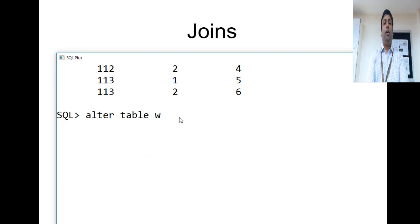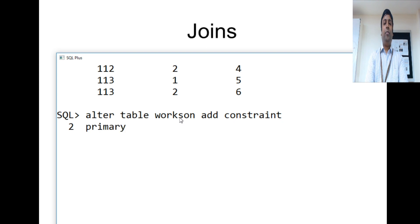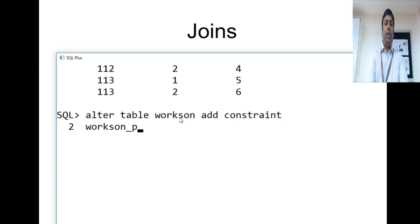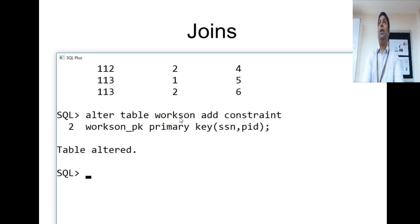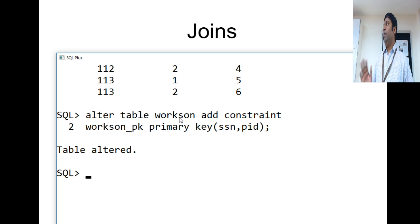To enforce this, we use the ALTER TABLE command: ALTER TABLE works_on, then ADD CONSTRAINT with constraint name works_on_PK, and the constraint is PRIMARY KEY on columns SSN and PID. This makes the combination of those two columns the primary key.